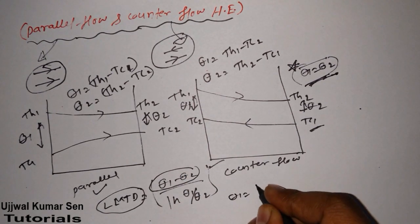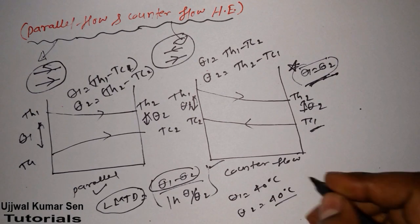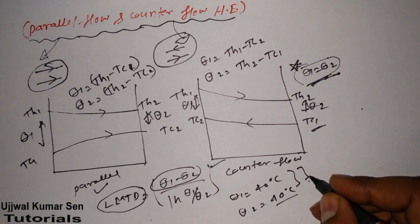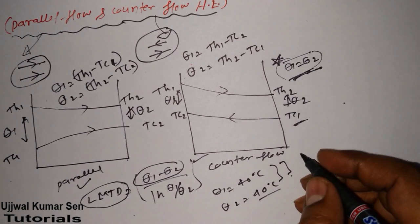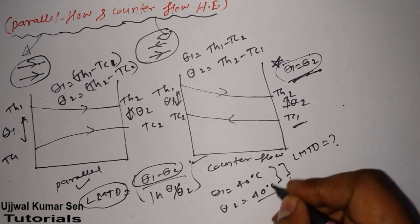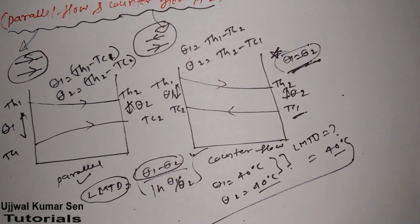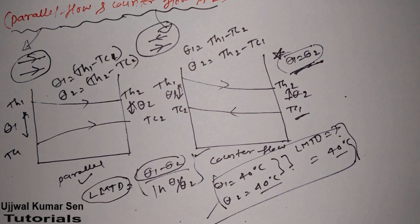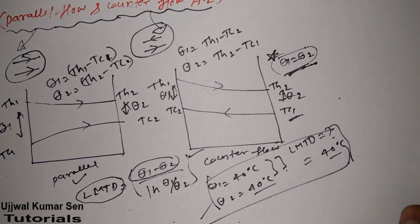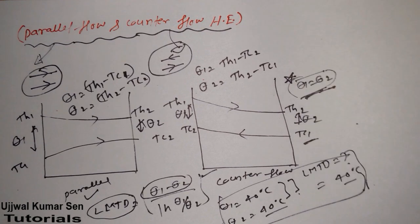For example, suppose θ1 = 40°C and θ2 = 40°C — the same temperature difference. This can only happen in a counter flow heat exchanger. In this case, LMTD is simply 40°C. This is the simple trick, and this type of question has appeared in examinations before.